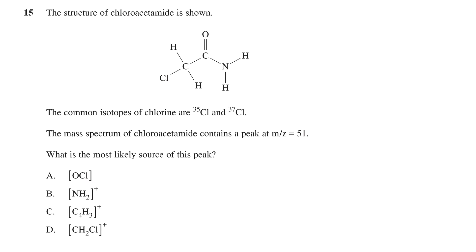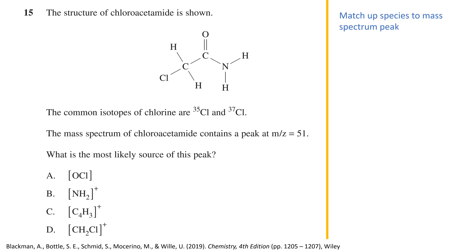The last question is question 15. The structure of chloroacetamide is shown, along with its structural formula. The common isotopes of chlorine are ³⁵Cl and ³⁷Cl. The mass spectrum of chloroacetamide contains a peak at m/z equal to 51. What is the most likely source of this peak? The options are: A. OCl (no charge), B. the NH₂⁺ ion, C. the C₄H₃⁺ ion, or D. the CH₂Cl⁺ ion. There are a number of ways to eliminate options — we will go through anything that doesn't require calculations first, to save time.